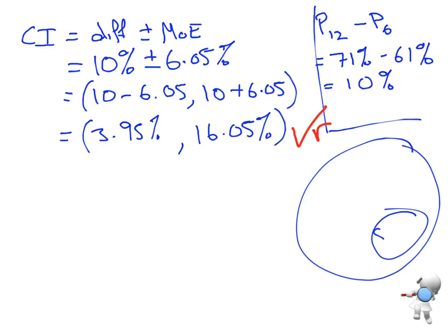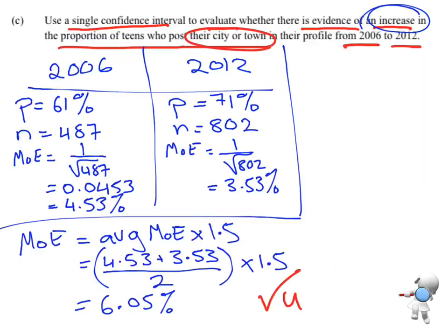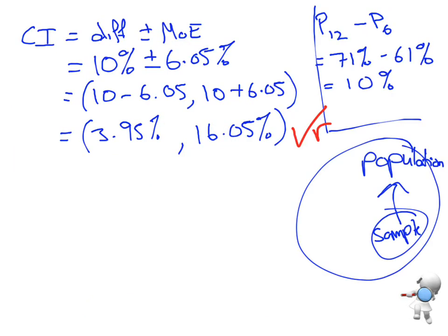Our confidence interval is using that sample to estimate what's happening in the total population and being able to say the population proportion is somewhere going to be between this much and this much. And we're talking about how much the proportion of teens who post their city or town that has increased by between 3.95% and 16.05% from 2006 to 2012.